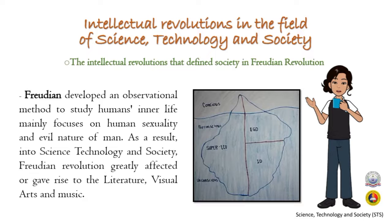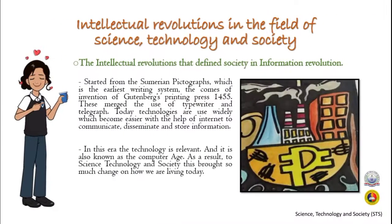The fourth and final intellectual revolution is the Information Revolution, which started from Sumerian pictographs, the earliest writing system. This was followed by the invention of the Gutenberg printing press in 1455, merging into the use of the typewriter and telegraph. Today, technologies are widely used, made easier by the internet to communicate, disseminate, and store information. This era is also known as the computer age, which has brought significant change to how we live today.